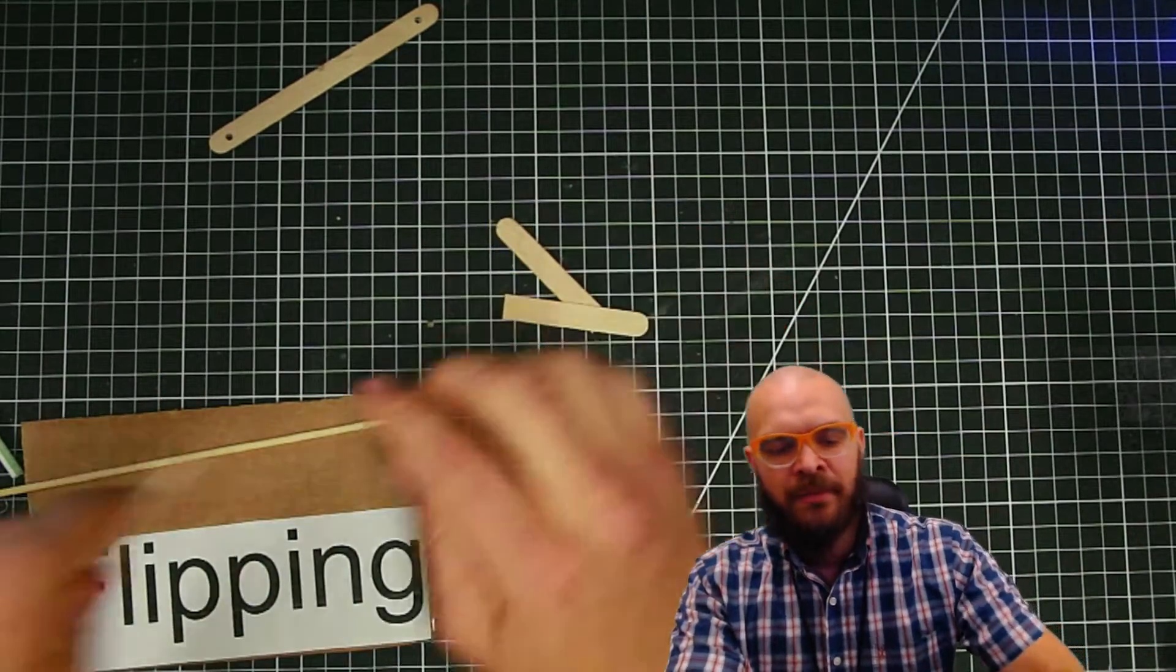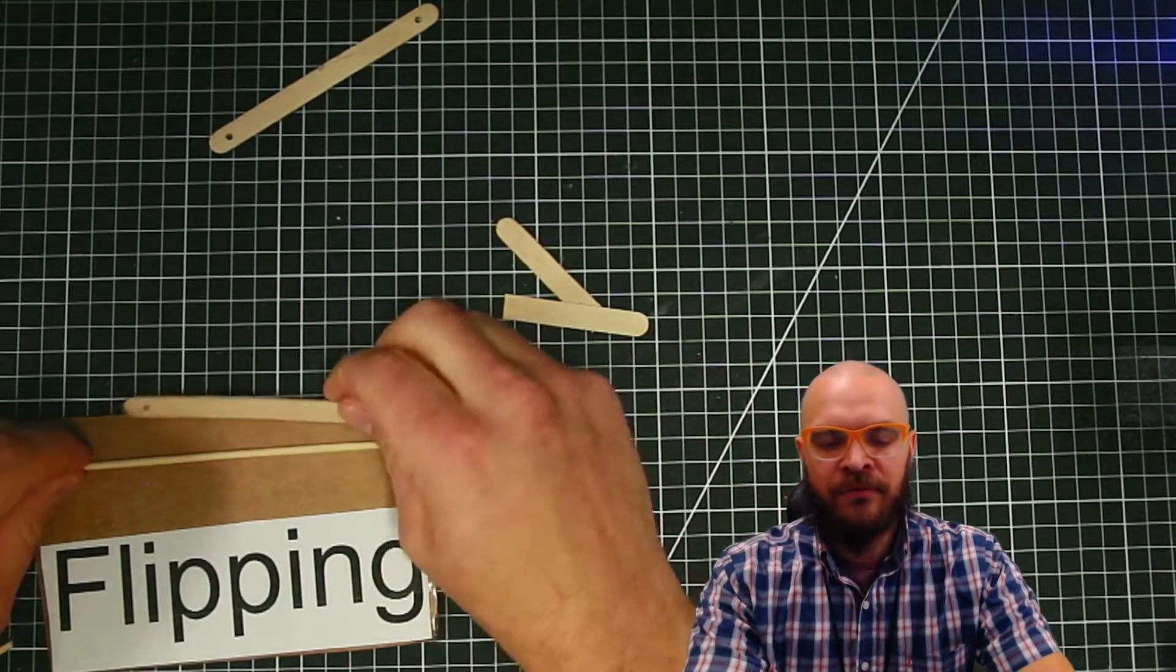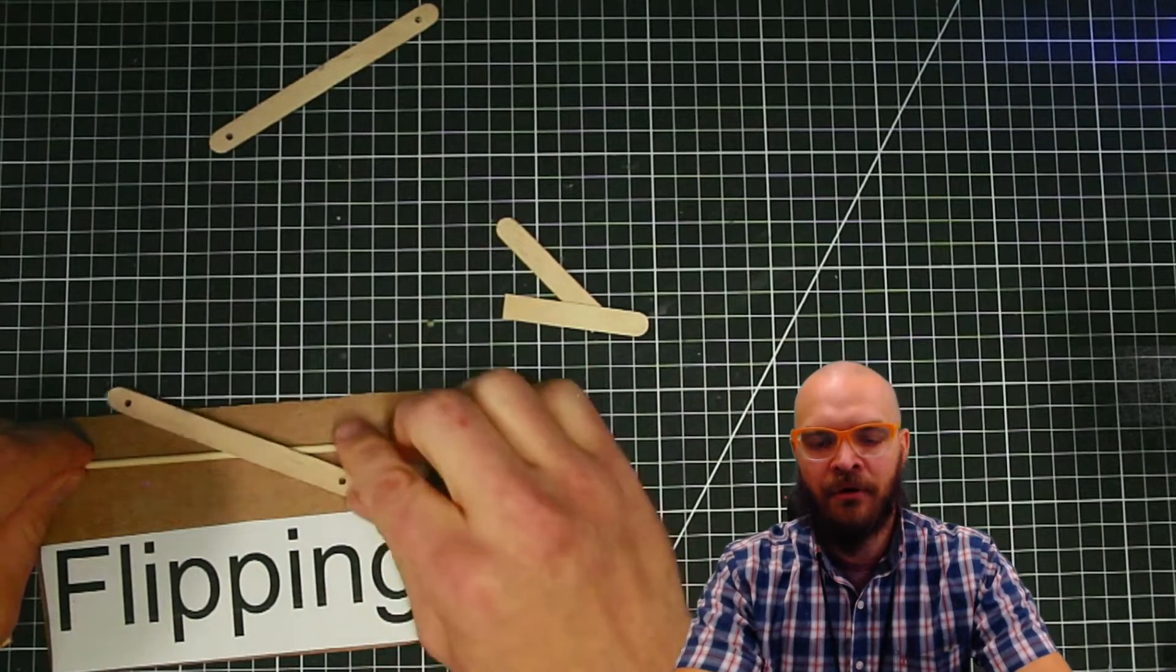We're going to start with a popsicle stick. It doesn't have to have a hole in it like this one does. This is going to flip from here over the bar to here.